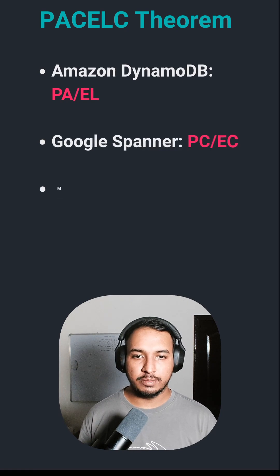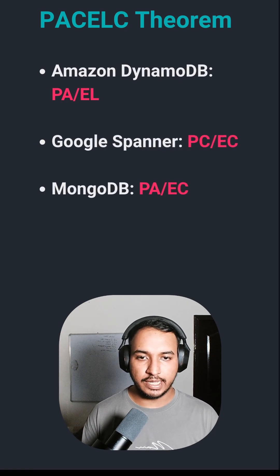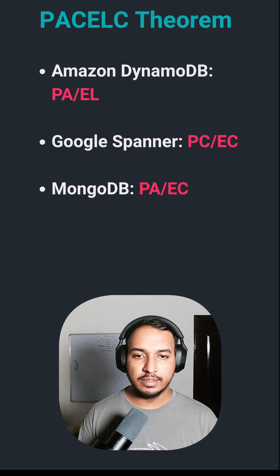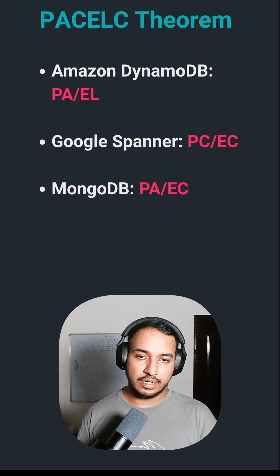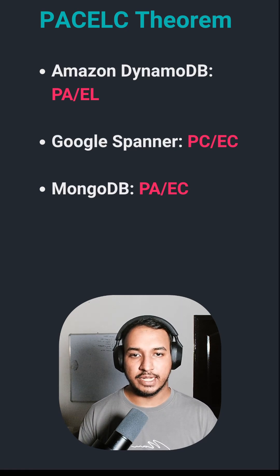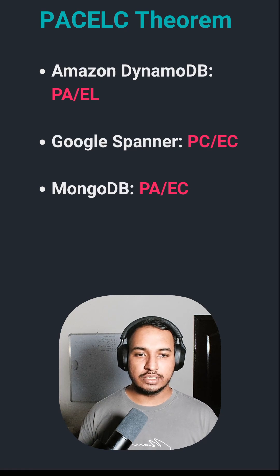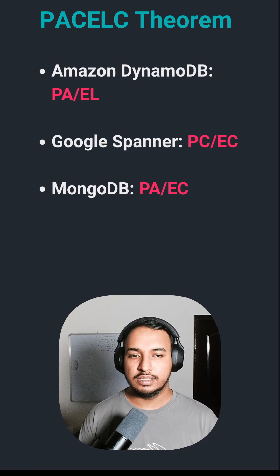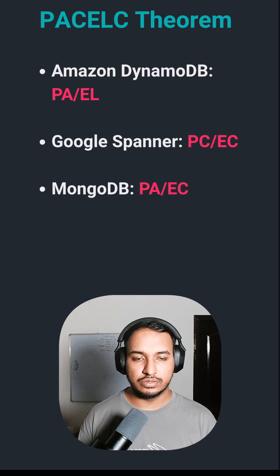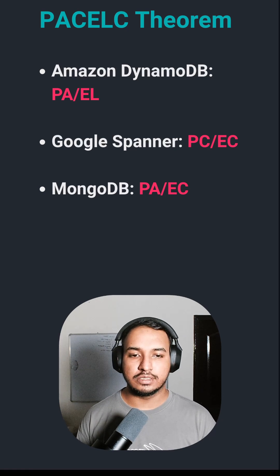Some examples are Amazon DynamoDB, which uses PA/EL — so partition availability, and otherwise it chooses low latency. Google Spanner chooses PC/EC — so partition consistency, and if there is no partition, then also it chooses consistency.